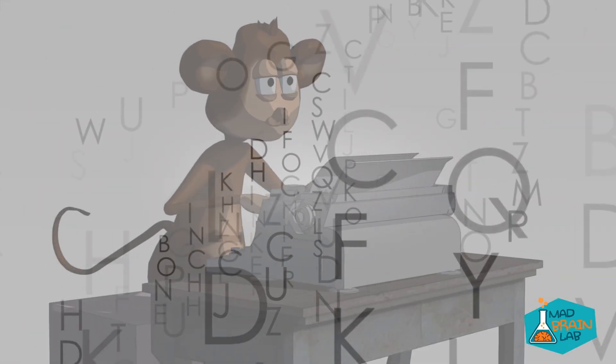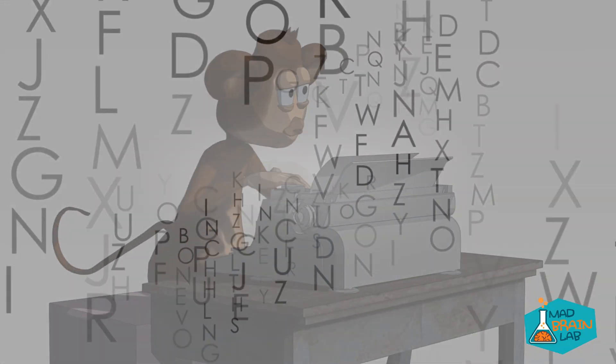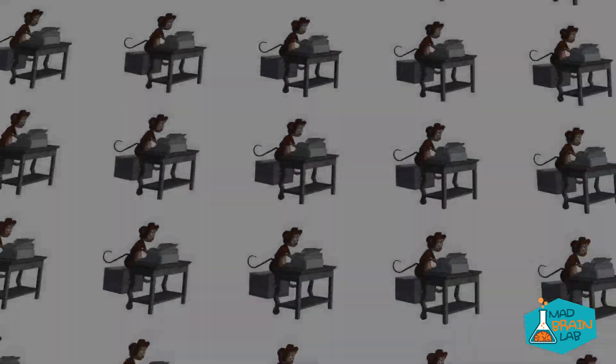Clone that number of monkeys and we will get the work of Shakespeare in about two months. Let's fill a building with one million monkeys that works 24 hours a day, week after week, month after month, typing one character per second without fail.